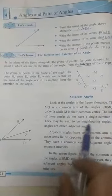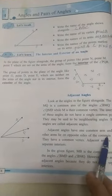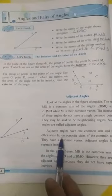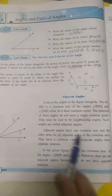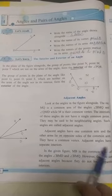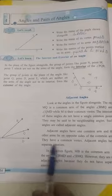Now adjacent angles. Adjacent angles have one common arm and the other arm lies on the opposite side of the common arm. They have a common vertex and separate interiors.